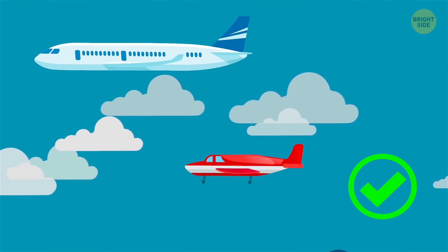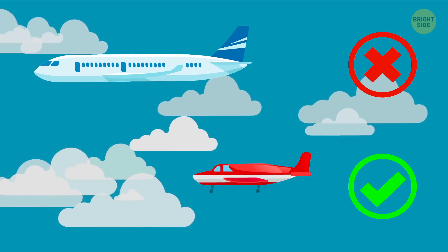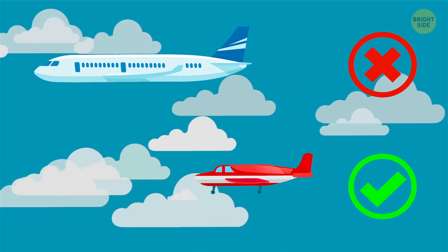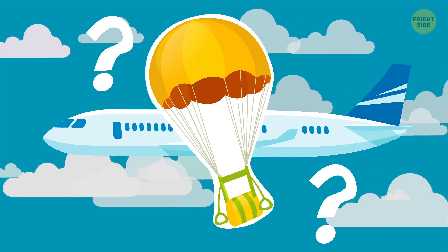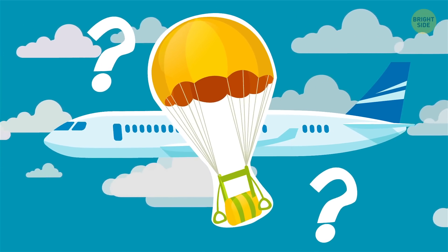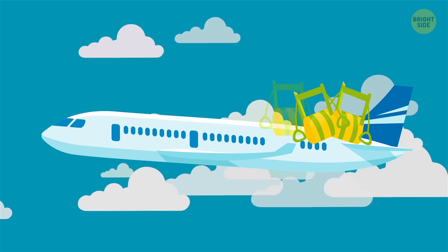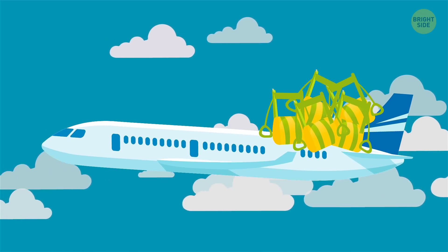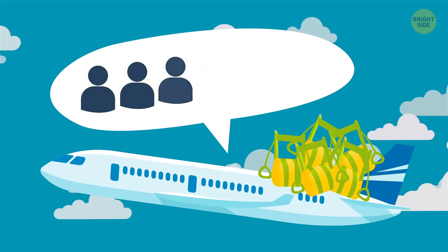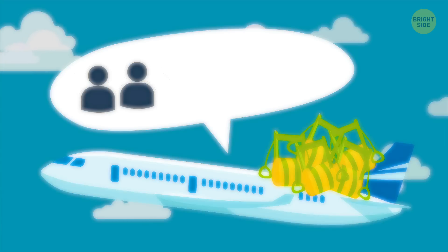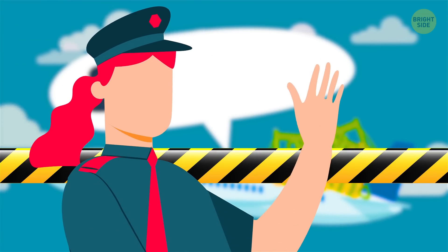Besides, most passengers don't pay attention to the pre-flight safety instructions to know where the emergency exit is located — can you imagine how the parachute training portion of that announcement would go? Finally, there's the issue of weight. Parachute equipment is heavy, and if you need one set per person, there's a lot less room for passengers. No law says you can't bring your own along for the ride, but don't expect a simple time getting through that TSA checkpoint.